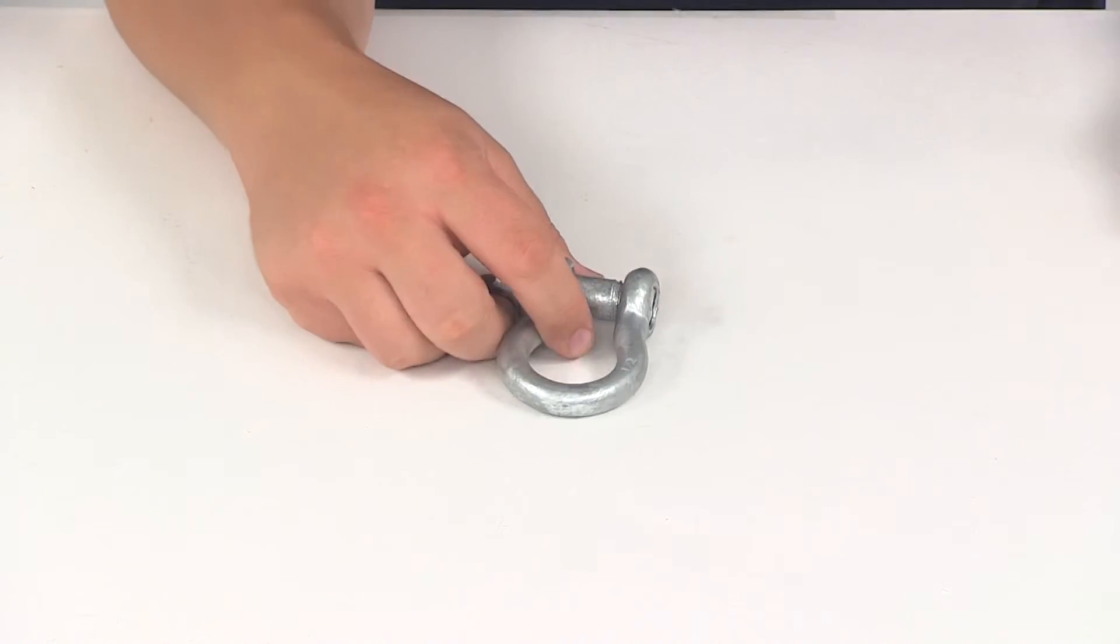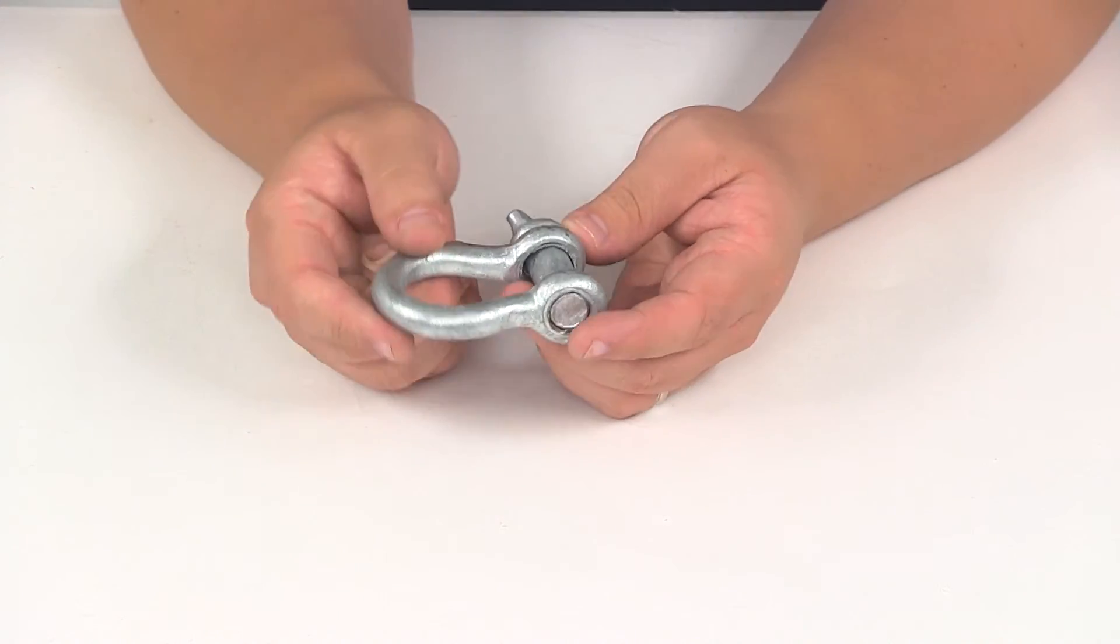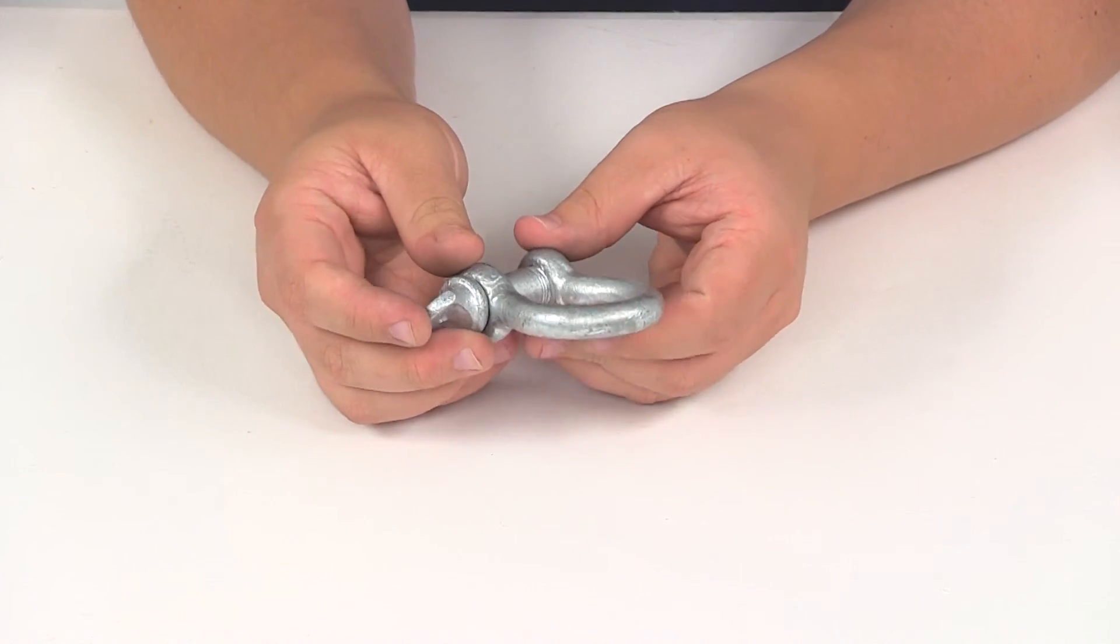With this part number you're going to get one shackle and screw pin, and that's going to do it for our review of part number GS07.